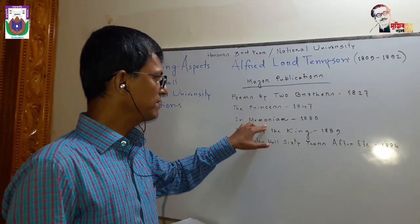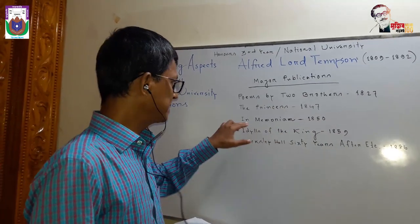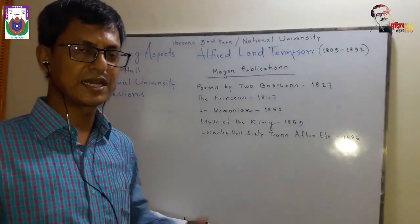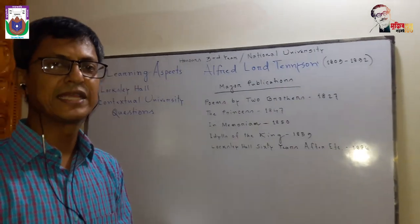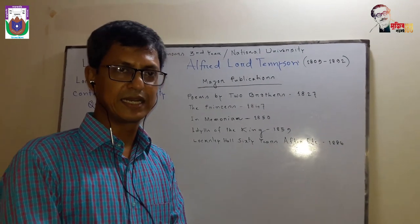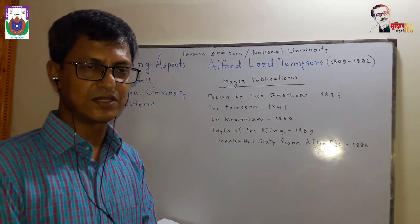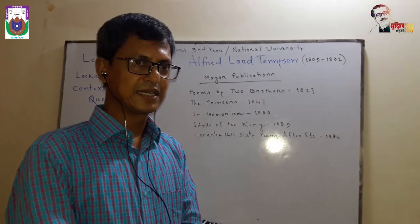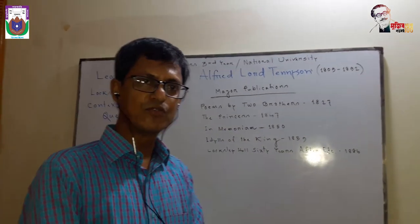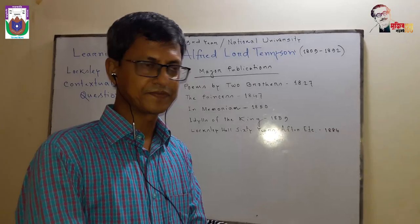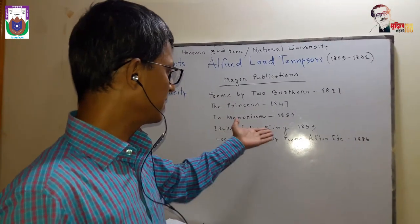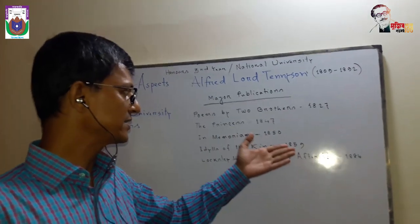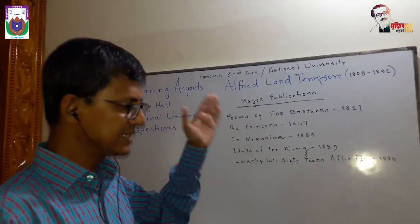His most famous poetical book, In Memoriam, was published in 1850. It is a collection of a series of poems dedicated to his most intimate friend Arthur Hallam, who has a deep mark on the life and poetry of Alfred Tennyson. This poetical book is considered the spiritual autobiography of Alfred Lord Tennyson. The Idylls of the King was published in 1859.